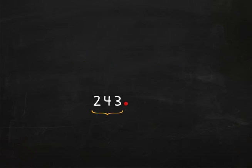Read the number to the left of the decimal point, two hundred forty-three, and then say 'and' when you see the decimal point.